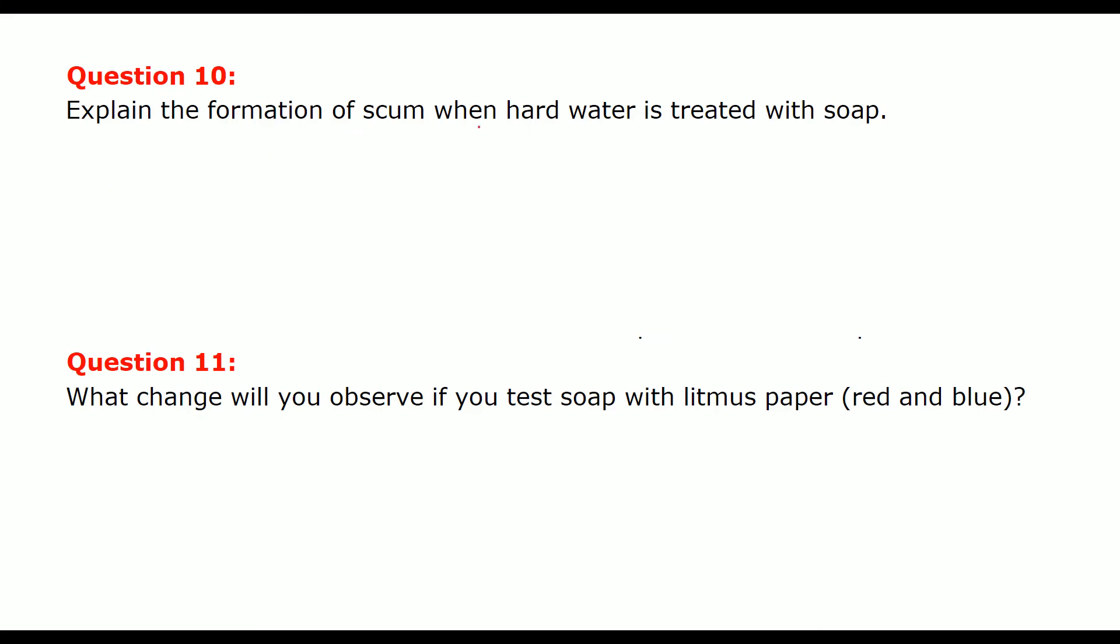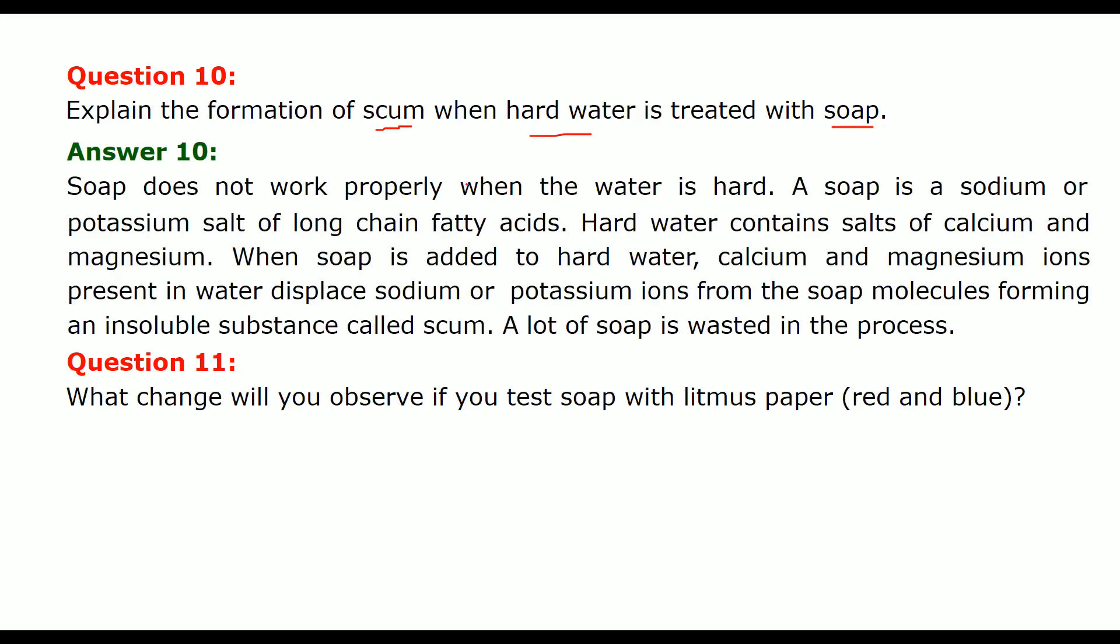Explain the formation of scum when hard water is treated with soap. Now, when soap combined with hard water, it does not lather that much. Right. It is very difficult. So, there is a scum or a precipitate being formed. So, soap does not work properly when the water is hard. Because soap is what? Soap is a sodium or potassium salt of long chain fatty acids. So, this hard water contains also calcium and magnesium. If the water is hard, it contains also calcium and magnesium. So, when soap is added to hard water, calcium and magnesium ions present in water, they actually displace this K and Na, sodium and potassium ion from the soap molecules. And they form a precipitate which is an insoluble substance called a scum. And a lot of soap is wasted in this process.